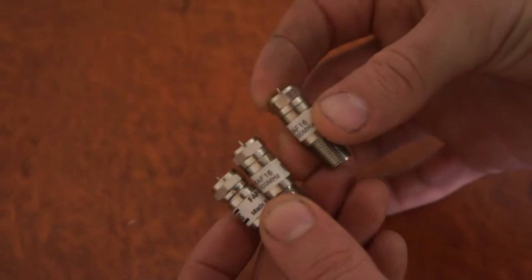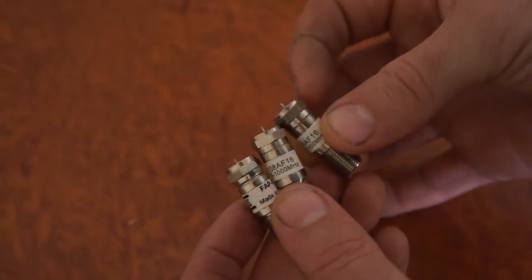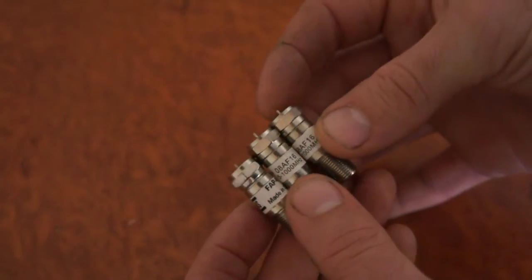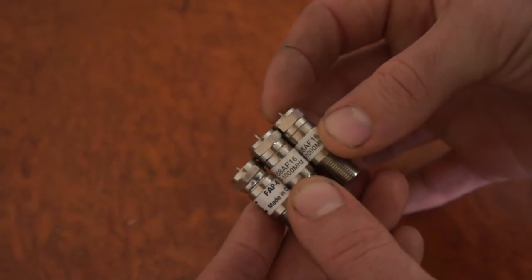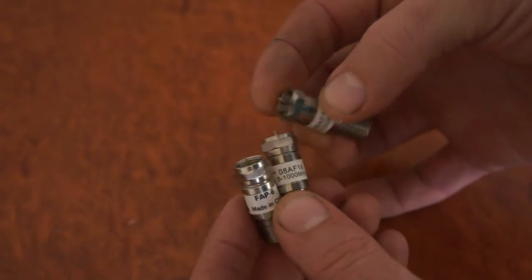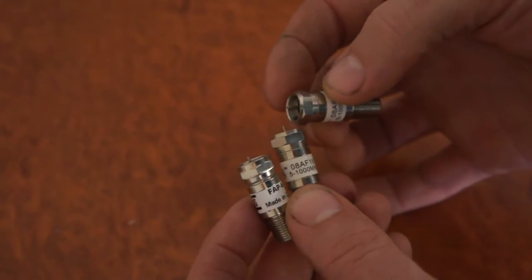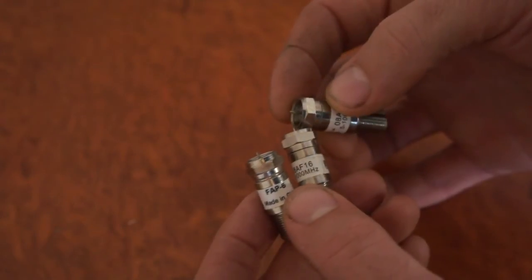Attenuators are used to retard the signal when you have too much signal, which is bad for digital TV. If you have a direct line of sight with the transmission towers, you may be getting pixelation from having a signal that is actually too strong.